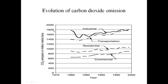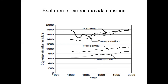This graph shows CO2 emissions from 1980 to 2000. The line for transportation shows an increase from approximately 1400 to 1800 million metric tons yearly. The residential, commercial, and industrial lines are also shown. These two slides are related to carbon dioxide emission — the distribution form and the evolution of carbon dioxide emission.